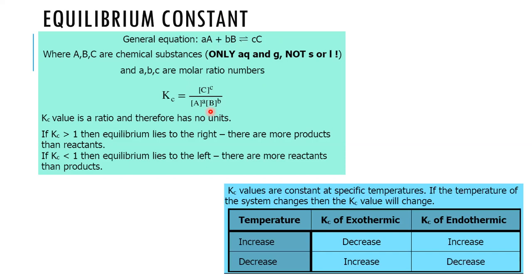So Kc equals concentration of C to the power c, divided by concentration of A to the power a times concentration of B to the power b. If Kc is more than 1, the reaction lies to the right — more products. If Kc is less than 1, the reaction lies to the left — more reactants. Kc depends on temperature: if the temperature of a system changes, the Kc value will change.